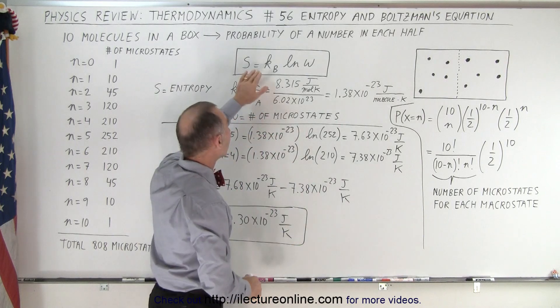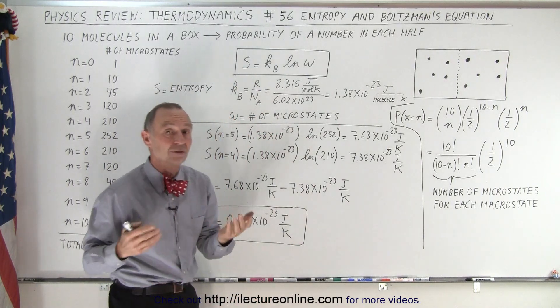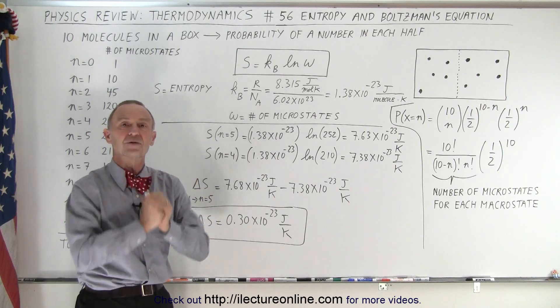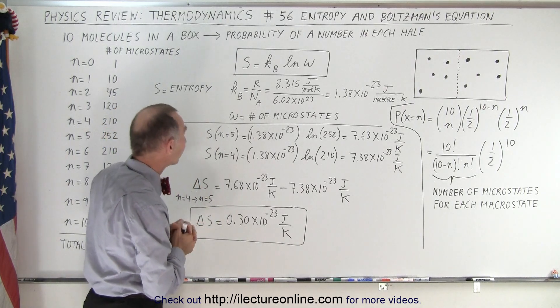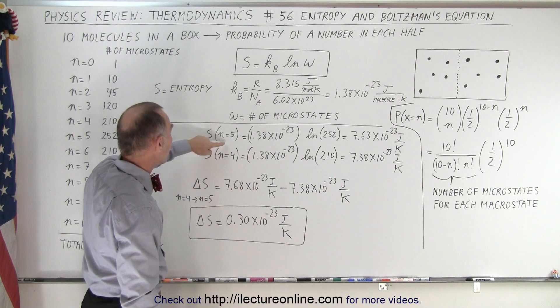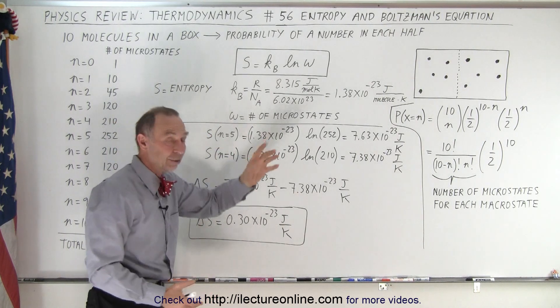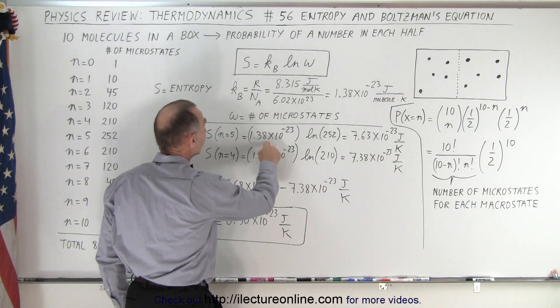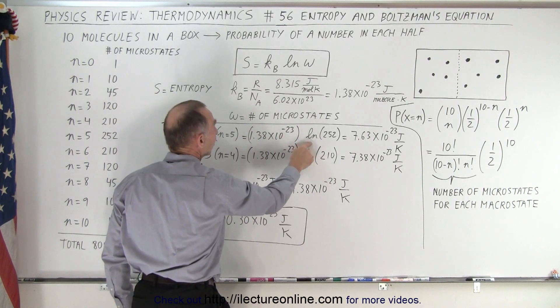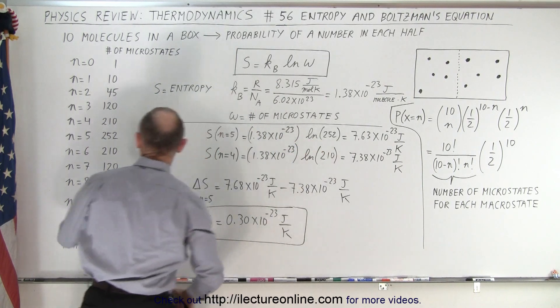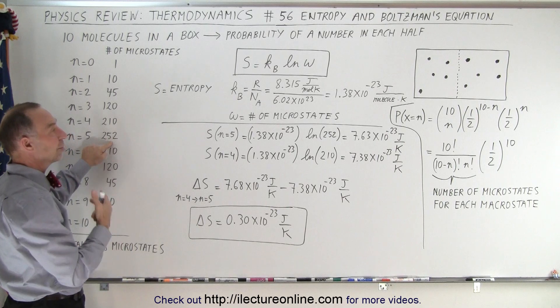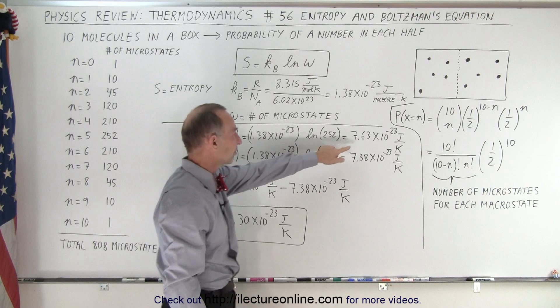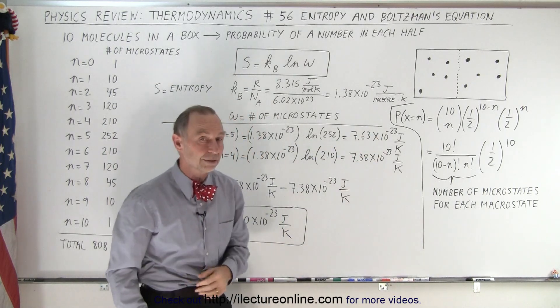So now we go back to the equation we have here, and we may ask the question, what is the entropy of a particular macrostate? Well, it can be calculated as follows. And so here, for example, when we say n equals 5, so that's the case where we have 5 molecules on one side and 5 molecules on the other side, we take Boltzmann's constant, k sub b, and we multiply times the natural log of 252, where 252 is the number of microstates for that particular macrostate. And we end up with a number of 7.63 times 10 to the minus 23 joules per Kelvin.